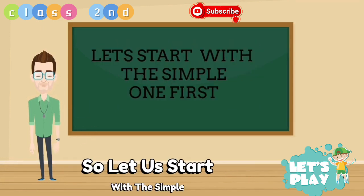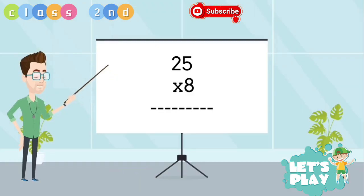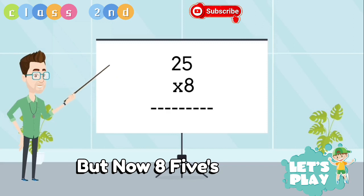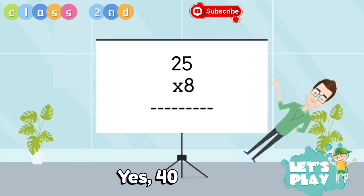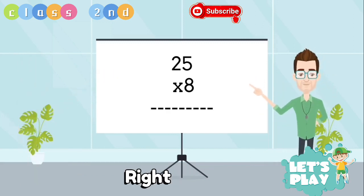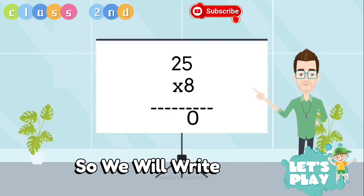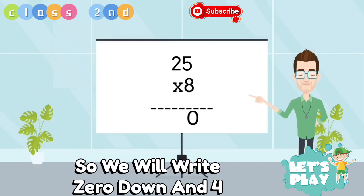So let's start with the simple one first. 25 multiplied by 8. Now 8 5's are yes 40 right, so we will write 0 down and 4 carry over.